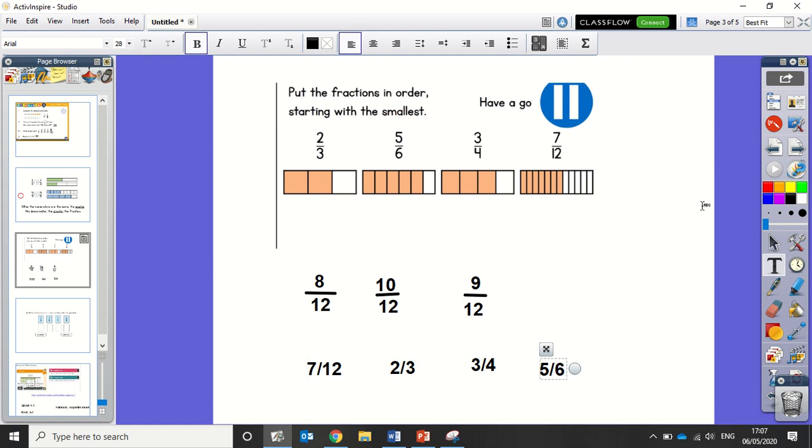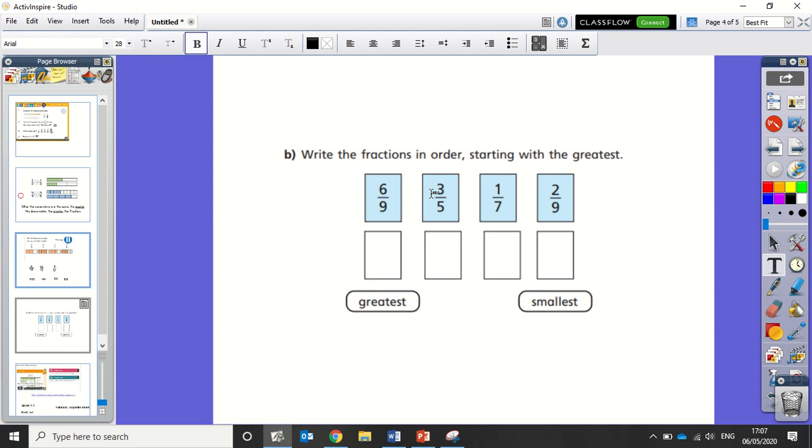Okay. Now, on your sheet, you've got this question here, 6B. Write the fractions in order, starting with the greatest. This question confused me. It's a really, really silly question to put in. So I'm going to help you with it. Now, the first thing I'm going to do is I'm going to compare them all to a half and see which is greater than a half and which are smaller than a half. These two fractions are bigger than a half. These two fractions are smaller than a half. Okay, so these fractions are obviously going to be bigger than those.